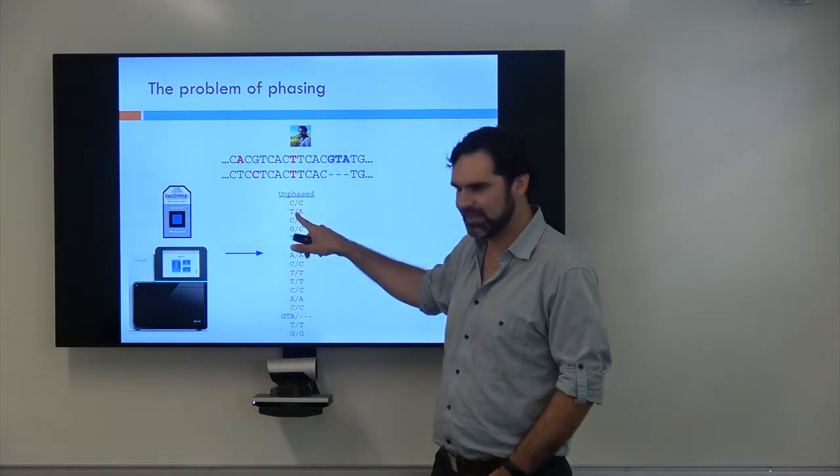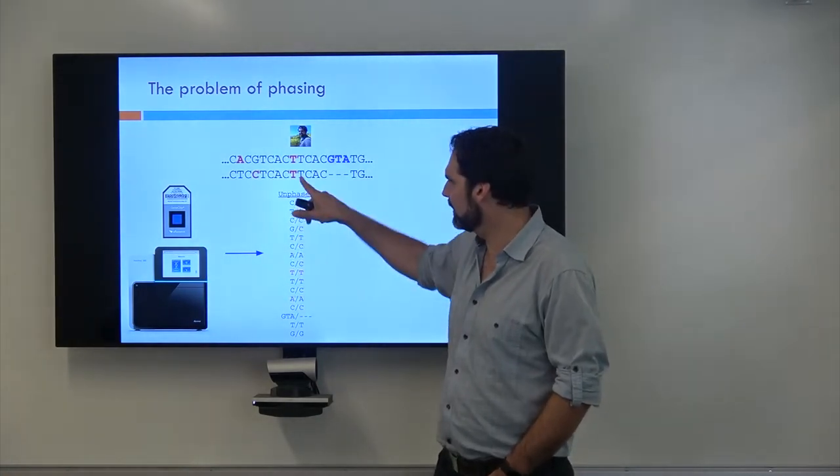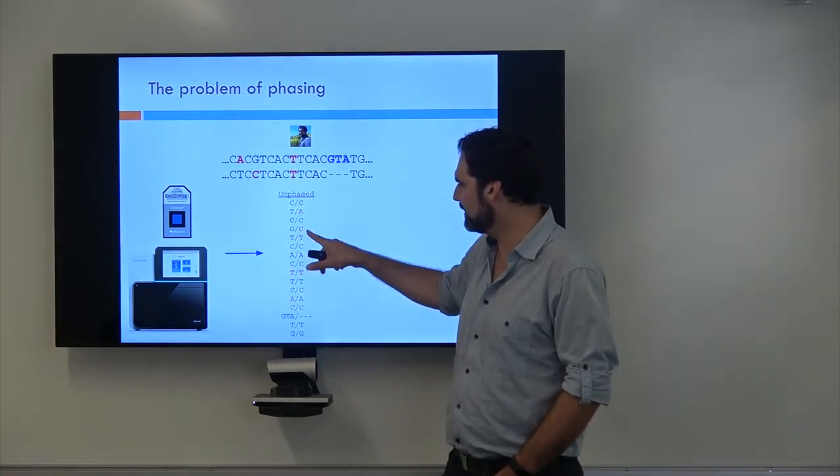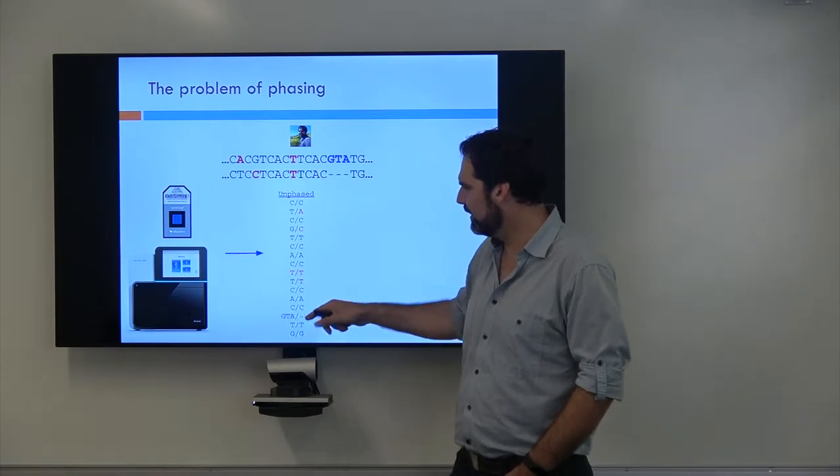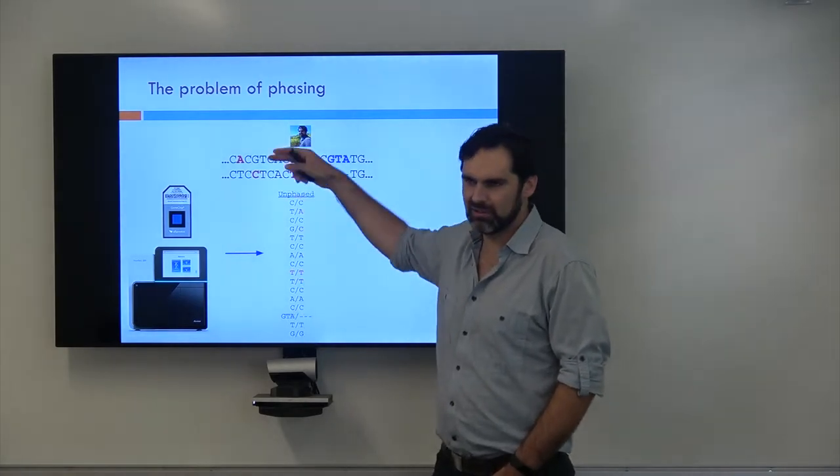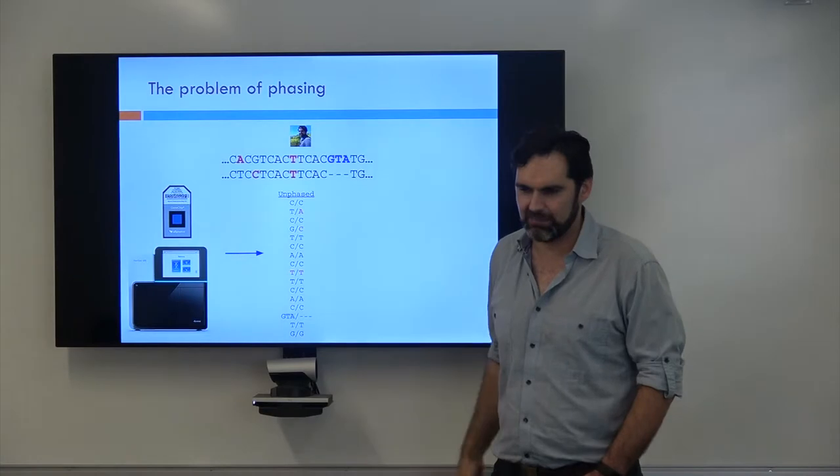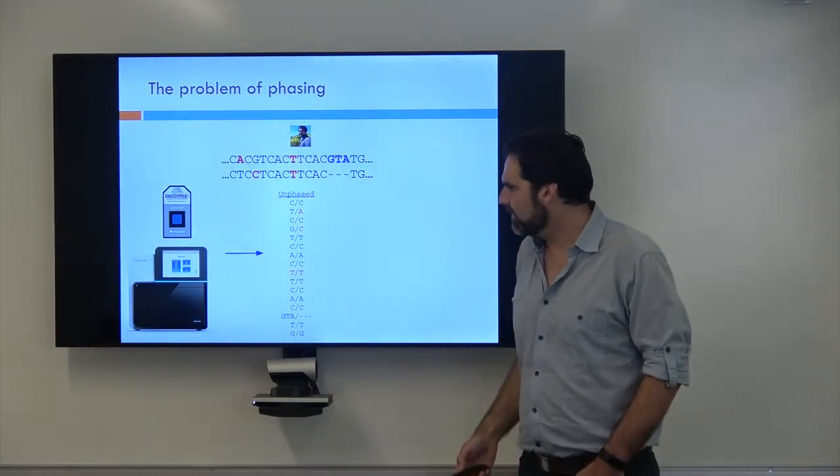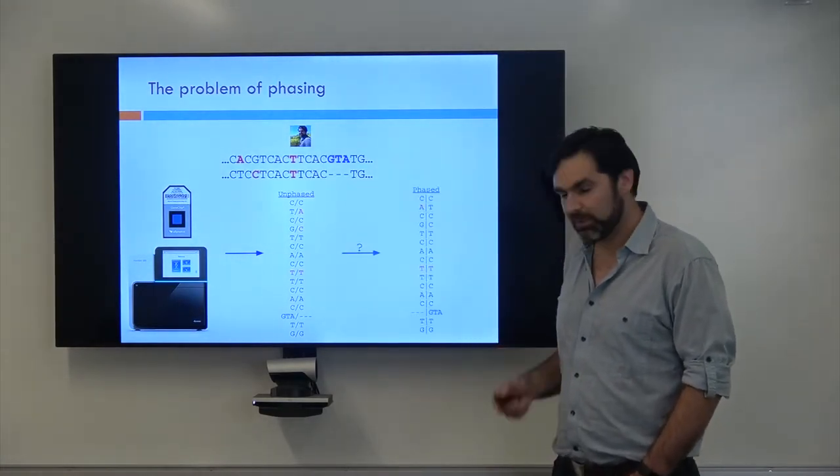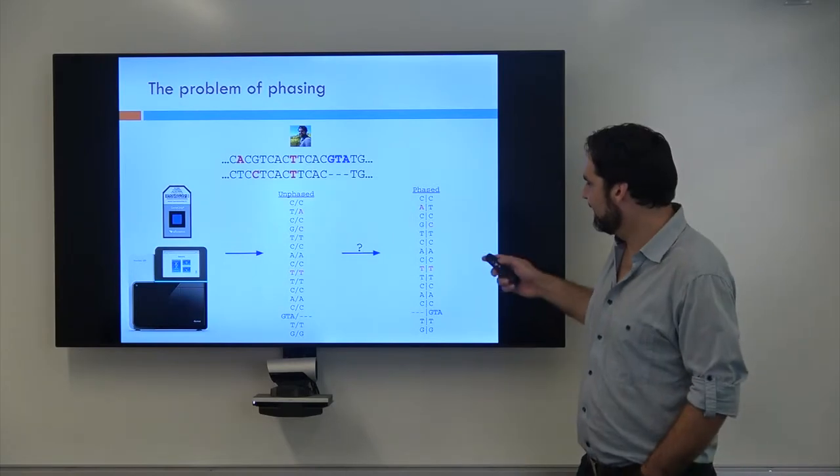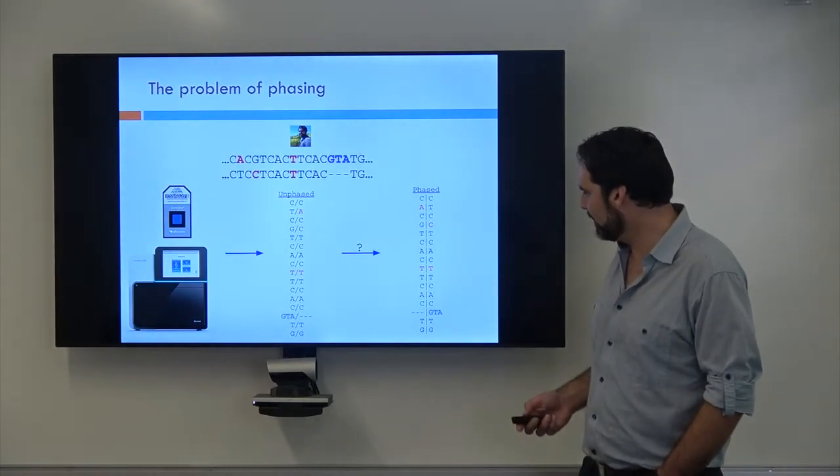The machine just says, at this first position, you're CC. And at the second position, you have a T and an A. Or here, you have a G and a C or a T and a T. But it doesn't tell me which chromosome it's on, which haplotype it's on. And that's what we really want to know, is what the phase is.